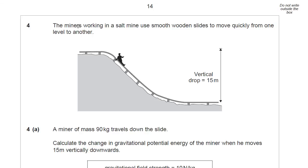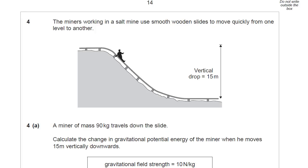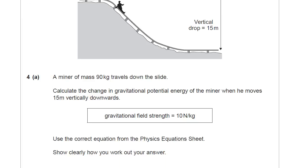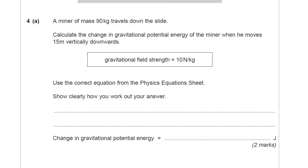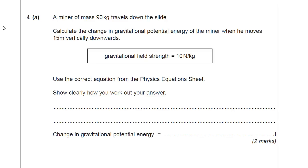Here we're talking about miners working in a salt mine who use smooth wooden slides to move quickly from one level to another. Here's the gentleman there sliding down his slide. Looks like a fun wee job. You've got some data in here. Don't ignore that. That's 15 meters vertical drop. A miner of mass 90 kilograms travels down the slide, so we know mass. Calculate the change in gravitational potential energy of the miner when he moves 15 meters vertically downwards.